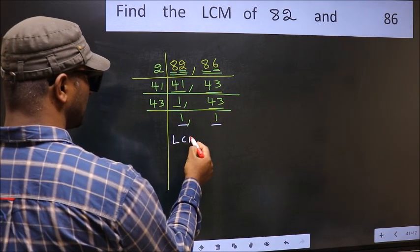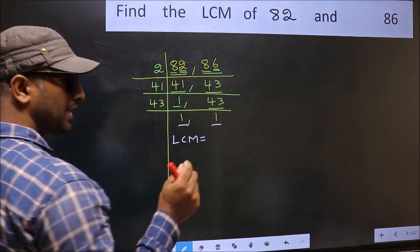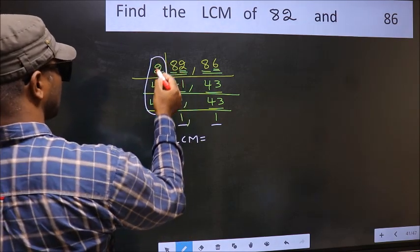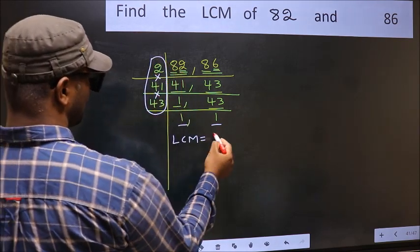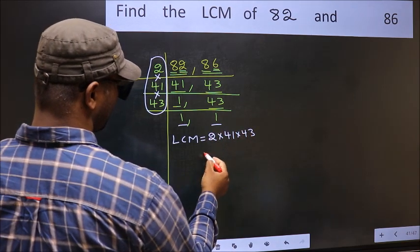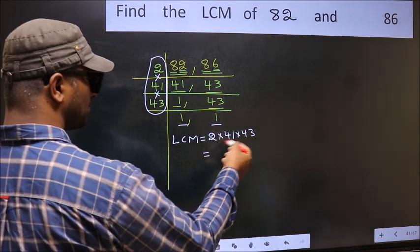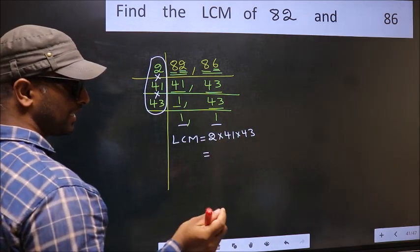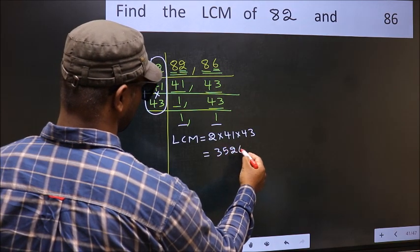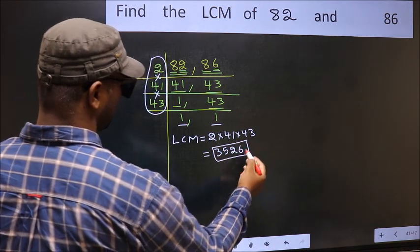So, our LCM is the product of these numbers. That is 2 into 41 into 43. When we multiply these numbers, we get 3526 is our LCM.